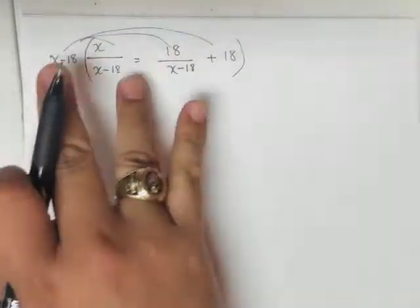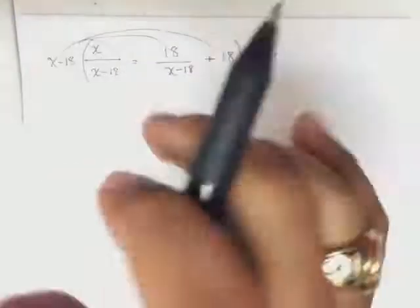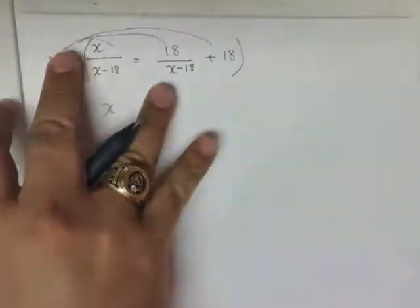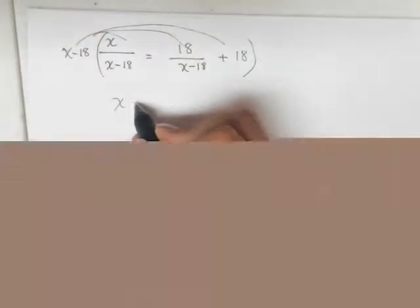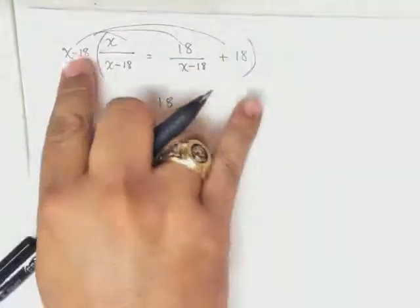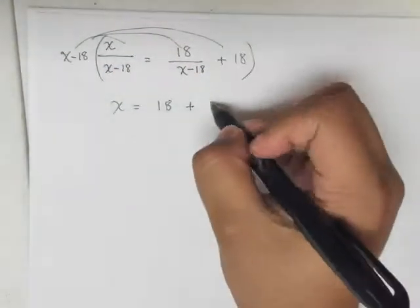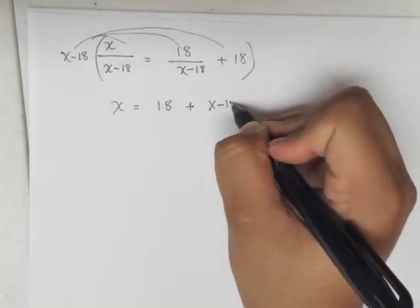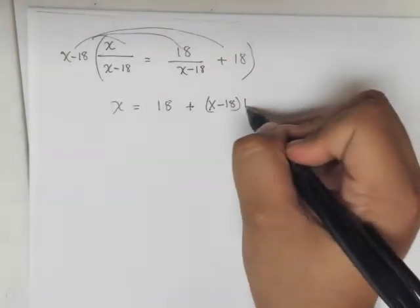So this is going to eliminate this right here, leaving us with x. And this eliminates again, leaving us with equals 18 plus (x minus 18) times 18.